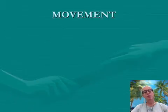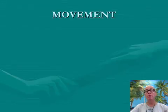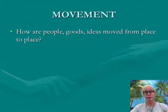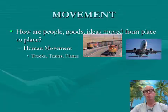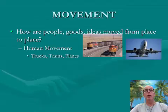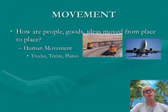The third way we can define geography is through movement. This is really important when we're speaking historically, because how people move ideas and things is a very important part of why people do what they do. We ask: how are people, goods, and ideas moved from place to place? How that happens now is quite different than how it happened historically. Today we use trucks, trains, cars, and automobiles to move. Back historically, those were not the modes of transportation — people moved by horseback, camel caravans, or simply by walking.